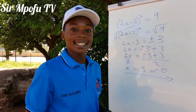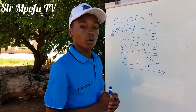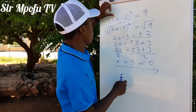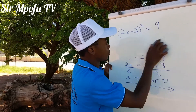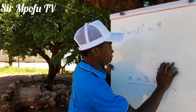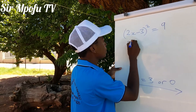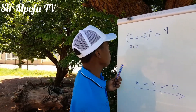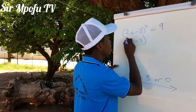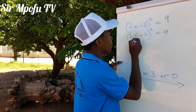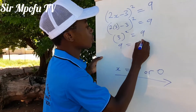This will be our final answer. Remember, each and every mathematical question can be proved. If you want to prove this, take x equals 3 and substitute it. We're going to prove using 3 first. It's going to be 2 times 3 minus 3 squared, which must equal 9. So here it's going to be 6 minus 3, which is 3 squared, equals 9. 3 squared is 9, and 9 equals 9. Proved.